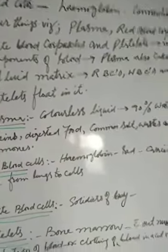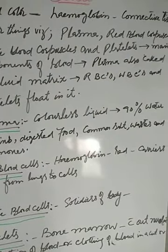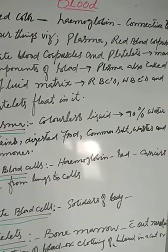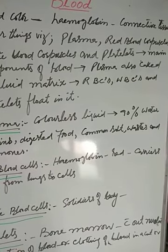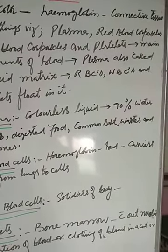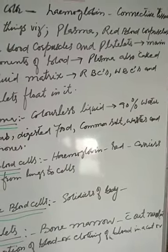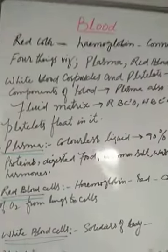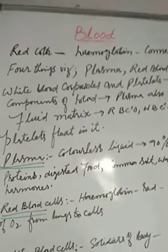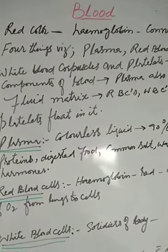In our previous lecture we discussed the transport of food and other substances in plants. Today we are going to study about blood, which is circulated in the human body or the bodies of animals.